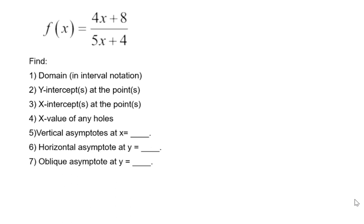In this problem, we're asked to answer the following questions about the given function. This is a rational function, which has a polynomial in the numerator and a polynomial in the denominator. In this example, both the numerator and the denominator are degree 1 polynomials, which makes them linear.